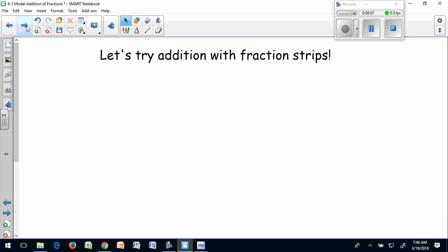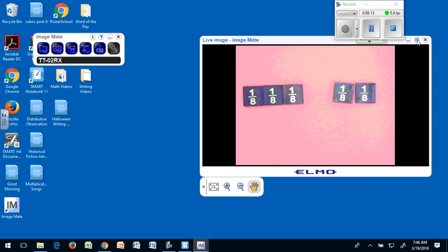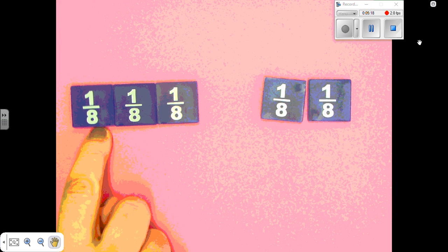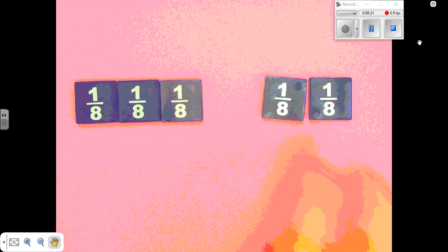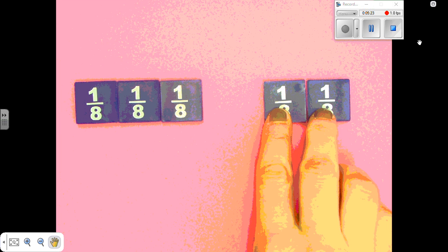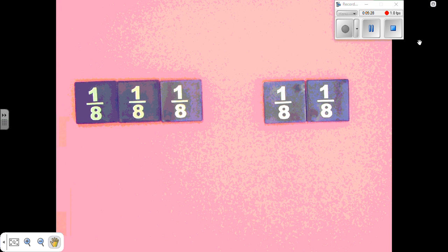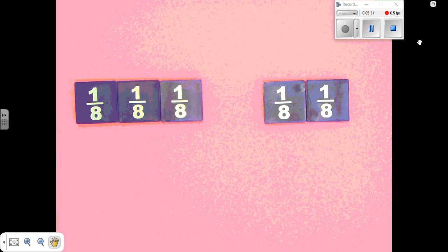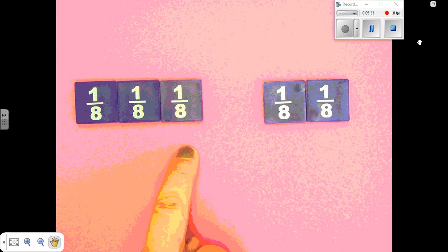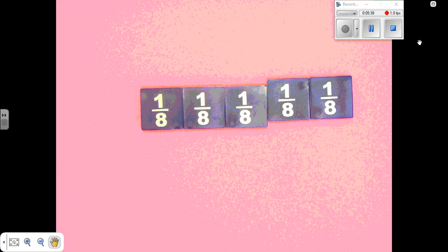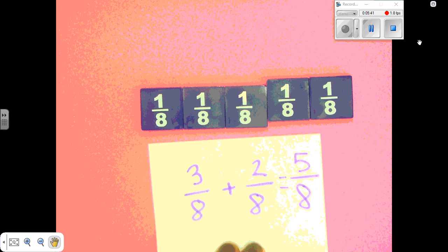Let's try some with addition fraction strips. In your notebook, write an equation that fits this model. You may pause the video to do so. Now let's solve this. Notice I have three eighths plus two eighths. And when I add them together, I have five eighths.